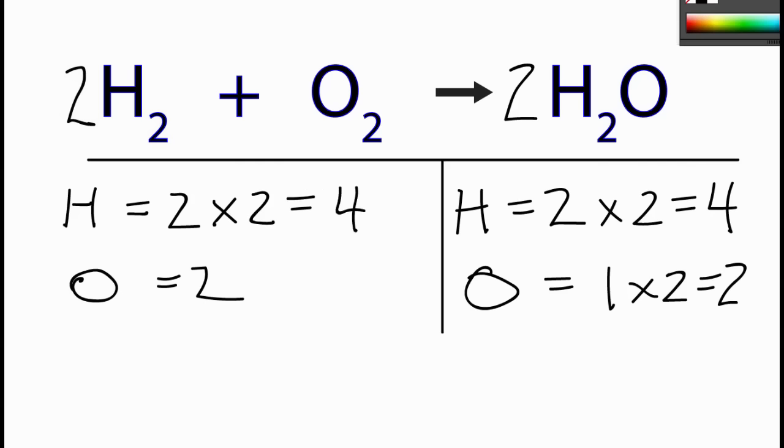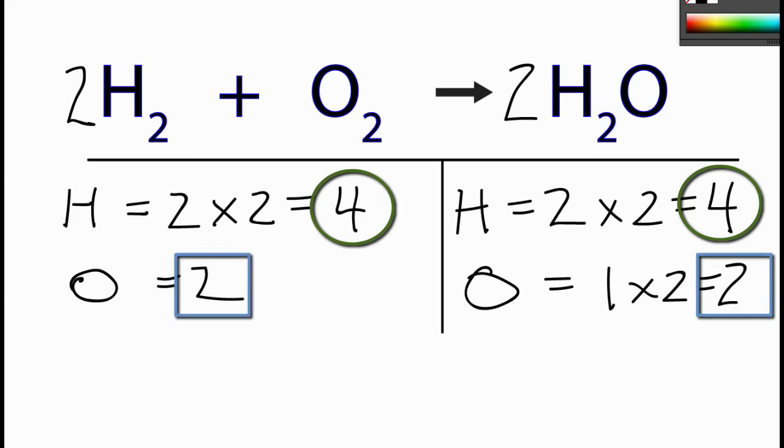So at this point, on each side of the equation, I have the same number for each type of atom. That means this equation is balanced.